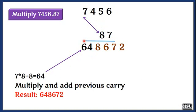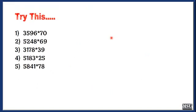By using this shortcut trick, you can easily multiply any 4 digit number with a 2 digit number. You can try these examples at home.